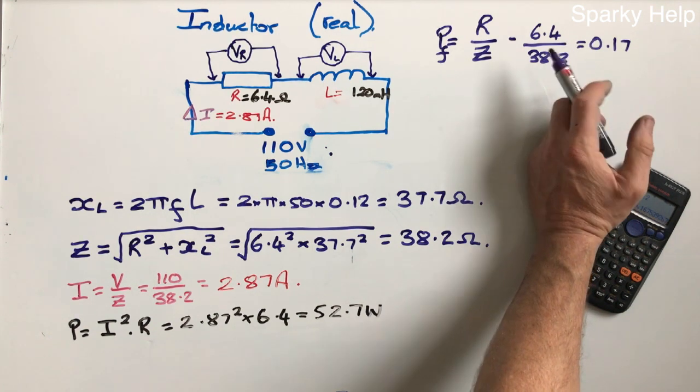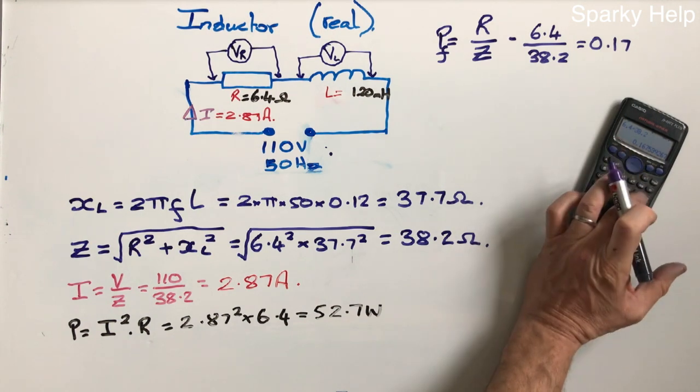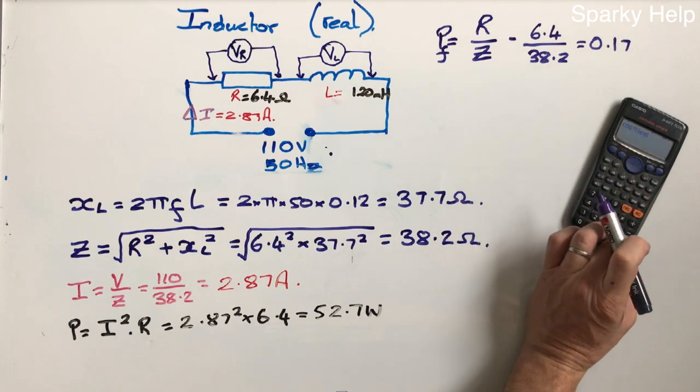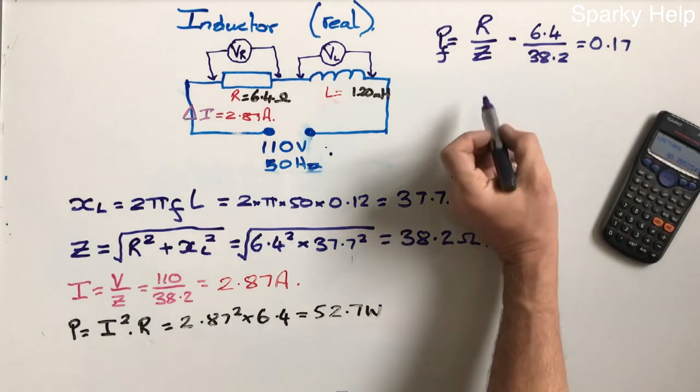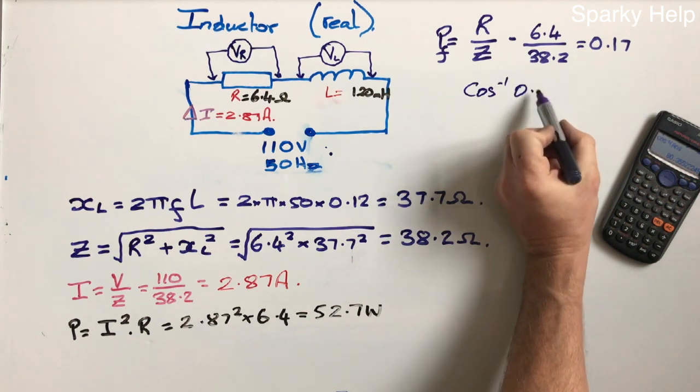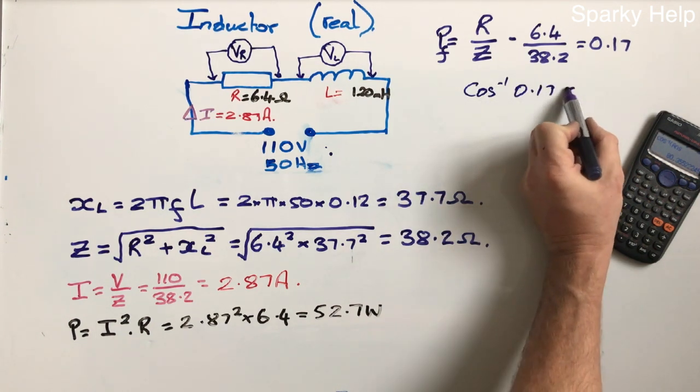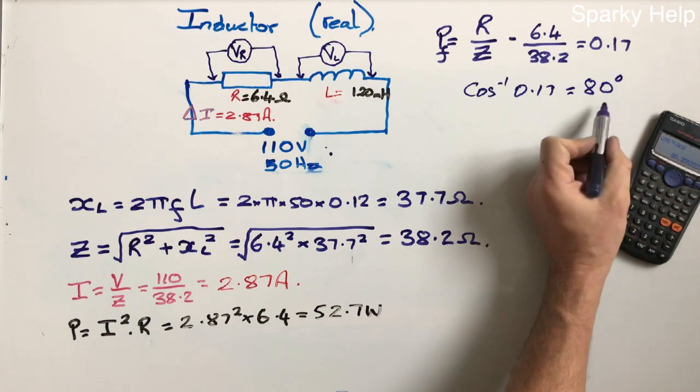Now what we can do is we can find out how far out of phase they are, because if I do shift cosine of that, 0.17, I get an angle. So the cosine to the minus one of 0.17 roughly is approximately, this is accurate, 80 degrees.